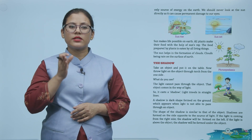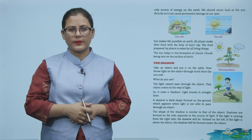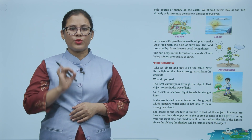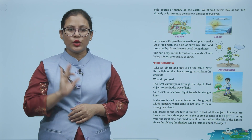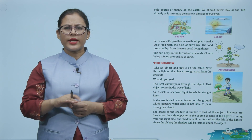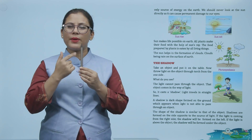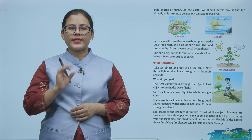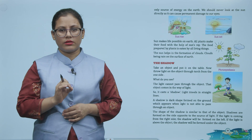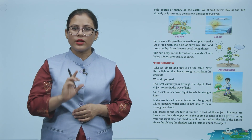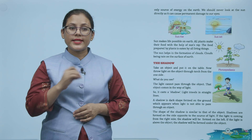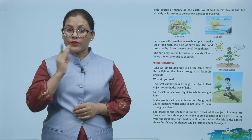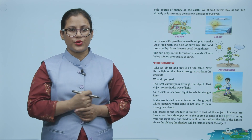Light travels in a straight line. A shadow is a dark shape formed on the ground which appears when light is not able to pass through an object. The shape of the shadow is similar to that of the object. Shadows are formed on the side opposite to the source of light. If the light is coming from the right side, the shadow will be formed on the left. If the light is above the object, the shadow will be formed under the object.